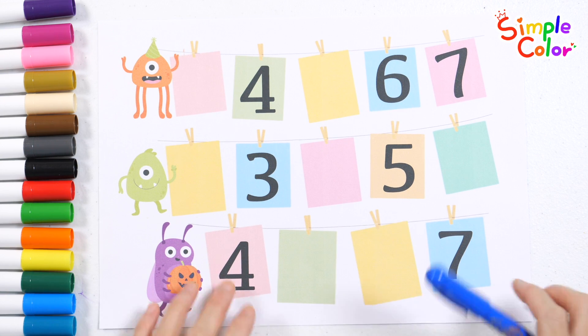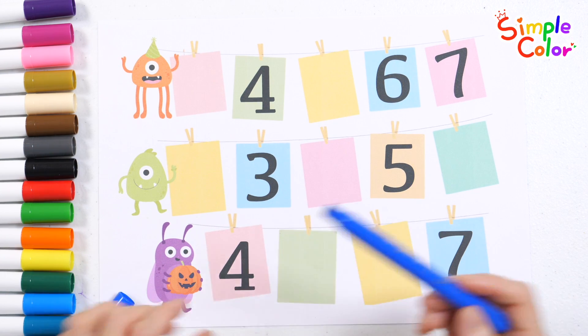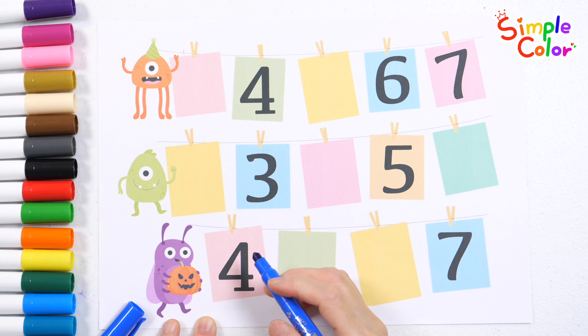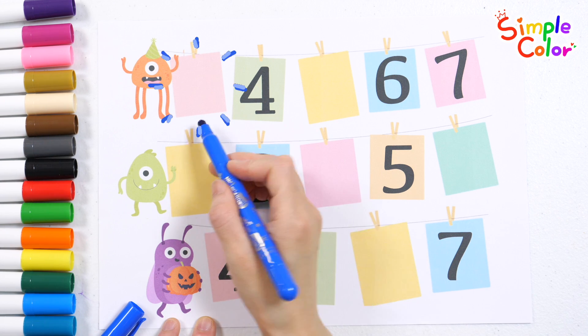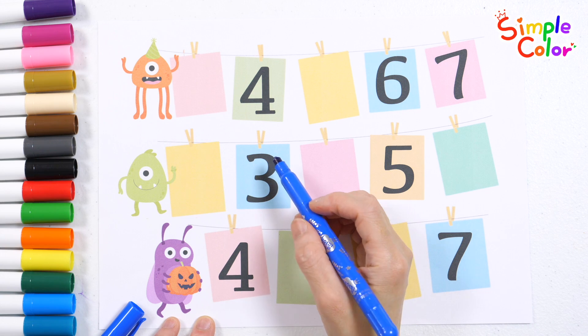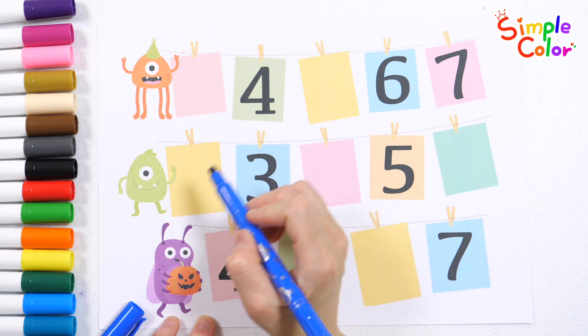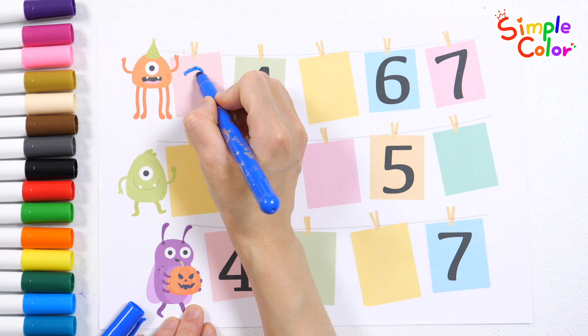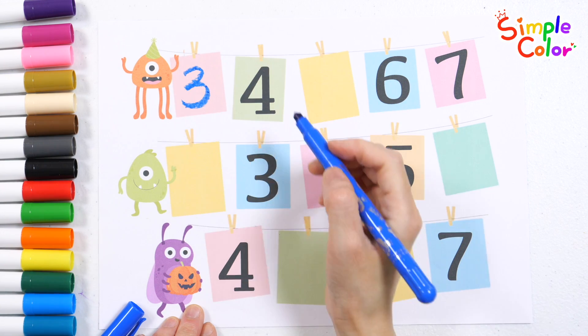3 friendly monsters have some numbers. Can we write the missing numbers in the empty spaces? Let's guess the numbers in the first row. Think about the number that comes before and after 4. Which number belongs here? The answer is 3.